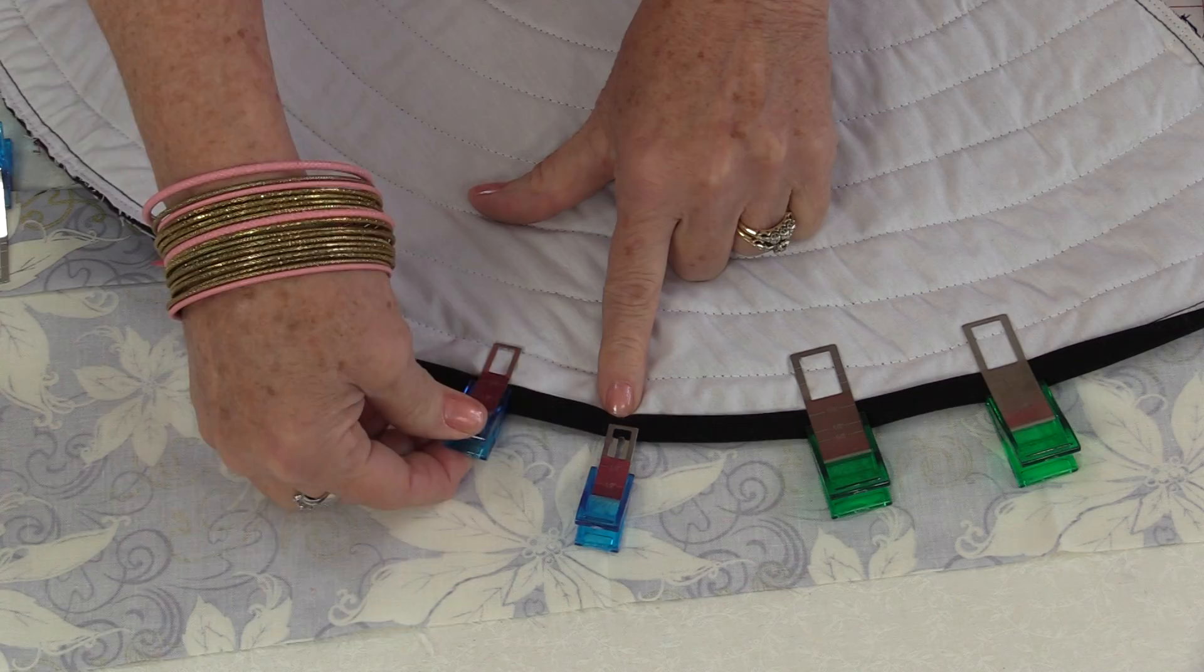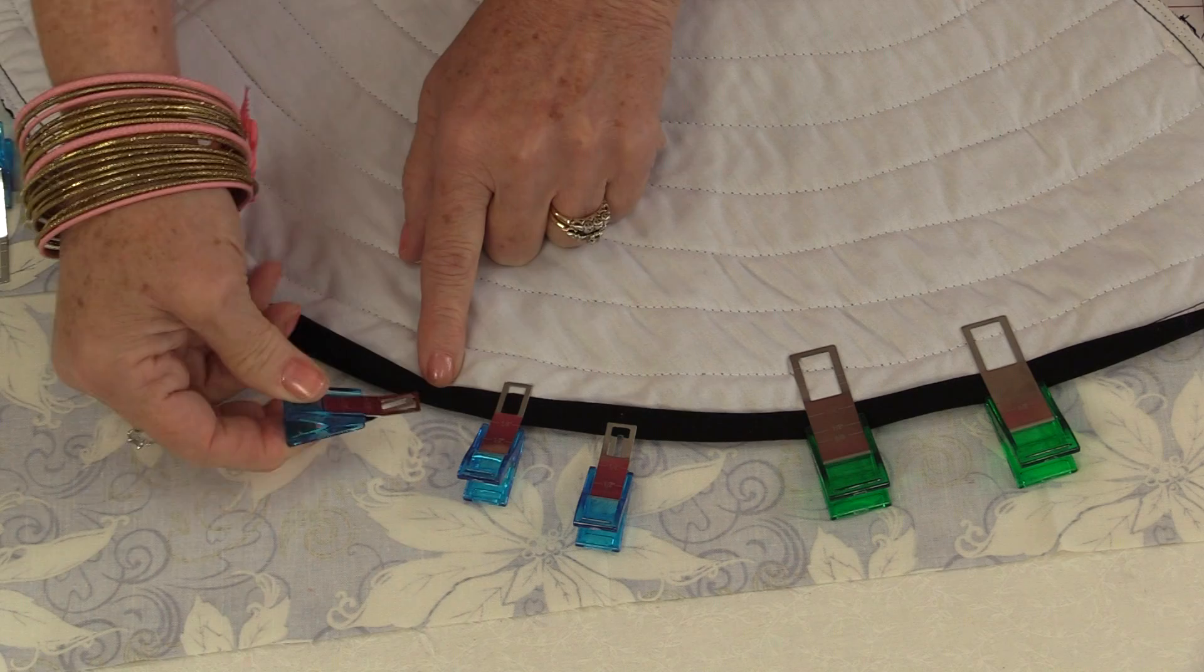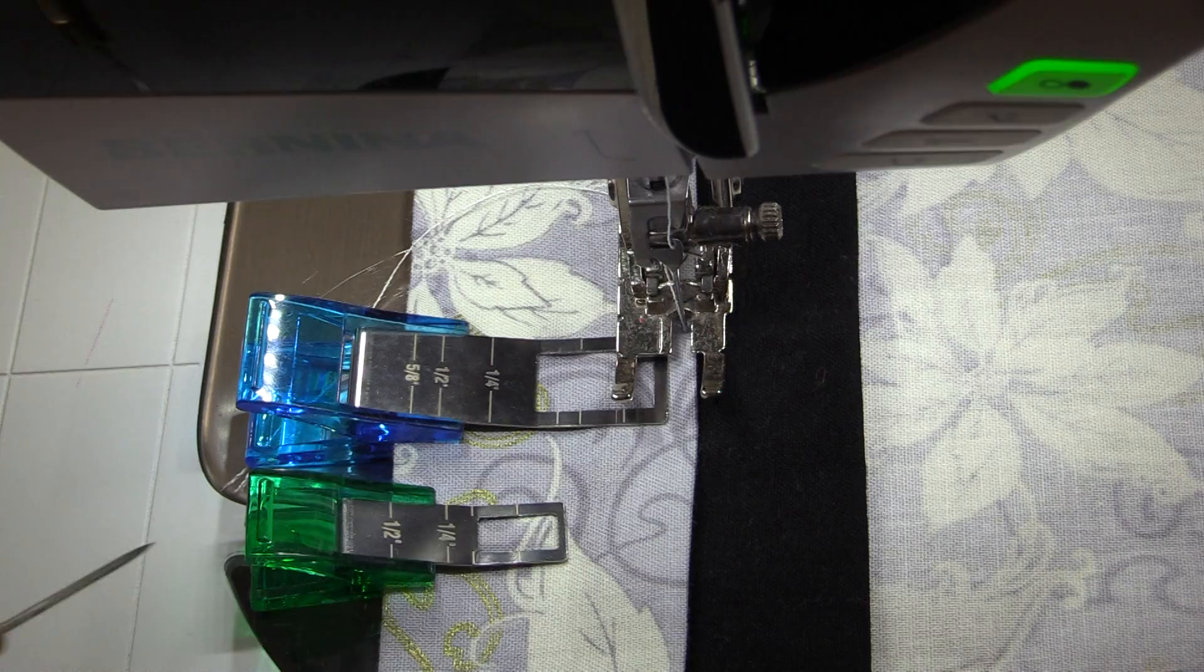You can clip with just a little bit at the end, you could clip with a little bit more, and you can clip all the way right to the end. So you can adjust wherever you want to put these clips. You can also sew very close right to the very end of that metal piece.